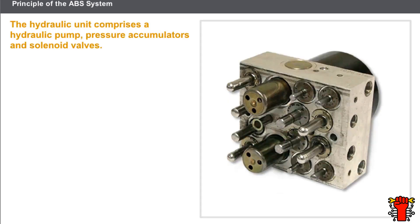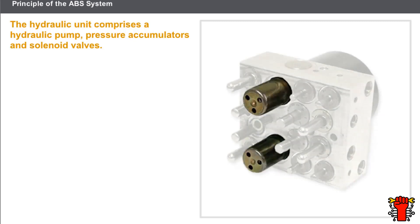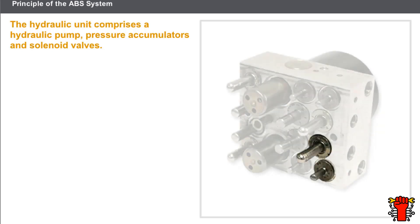The hydraulic unit comprises the following elements: a hydraulic pump, which prevents the pedal from being fully depressed during the ABS regulation phase; pressure accumulators; and solenoids that regulate the braking pressure for each wheel. Each wheel has an inlet solenoid and an outlet solenoid.